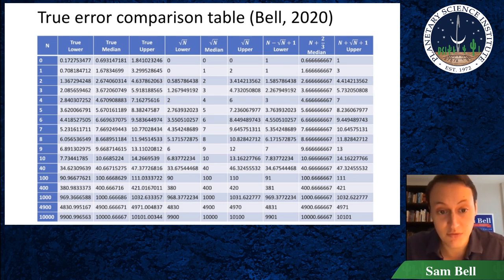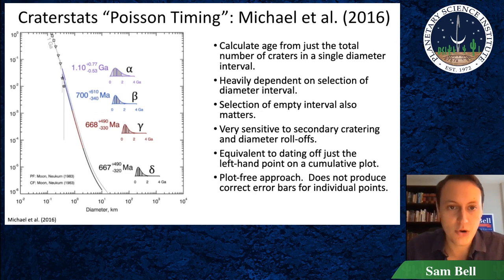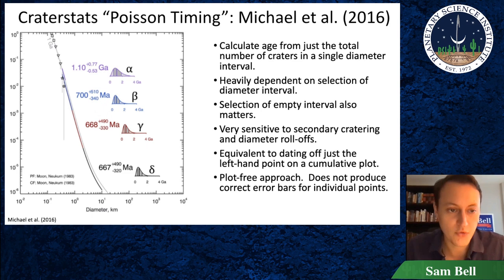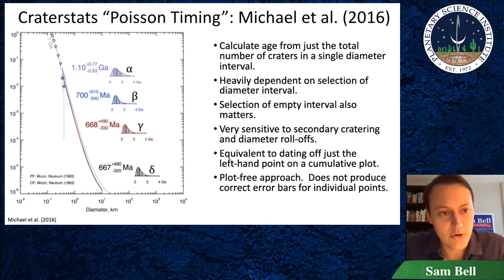The people who make crater stats are good scientists and are well aware of this problem. They have come up with a Poisson timing method to try and implement the true Poisson error. The issue is that it only dates based off the total number of craters in a single diameter interval, making it heavily dependent on the selection of that interval, and meaning that the selection of an empty interval matters. This is also very sensitive to secondary cratering and to diameter roll-offs, which is saturation.